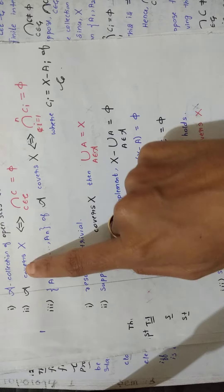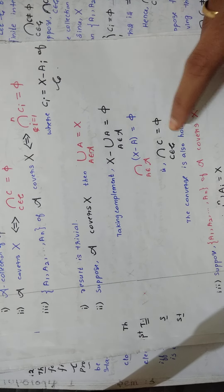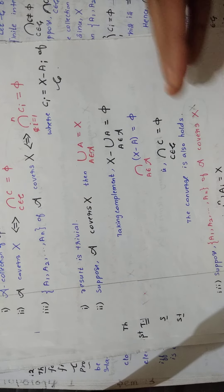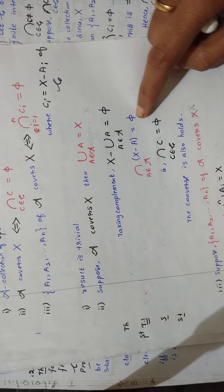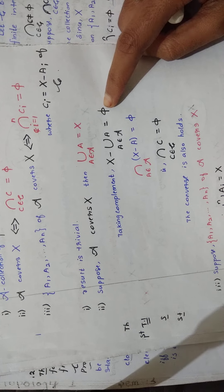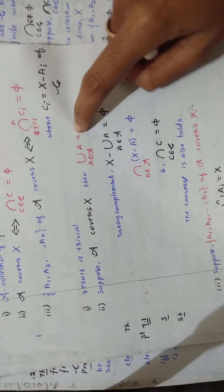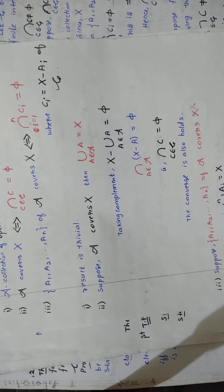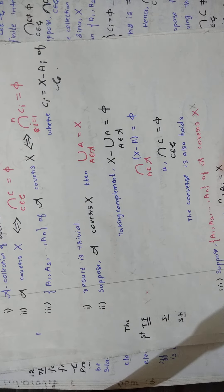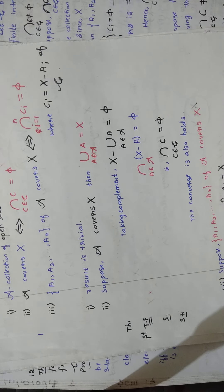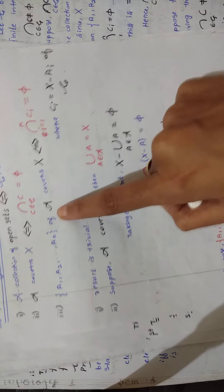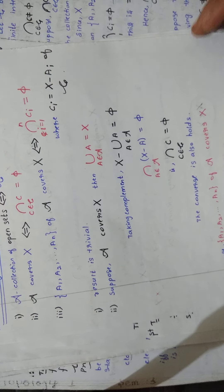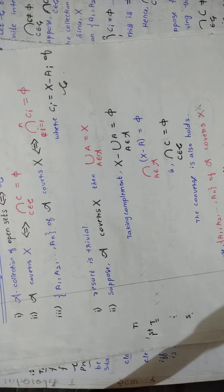For the converse part, you assume the intersection equals empty and go in reverse order through the steps to recover that script A covers X. We are just writing that the converse is also true — it can be proved by reversing the steps.